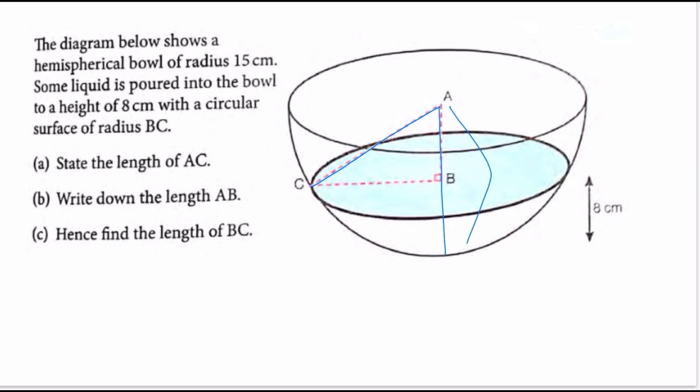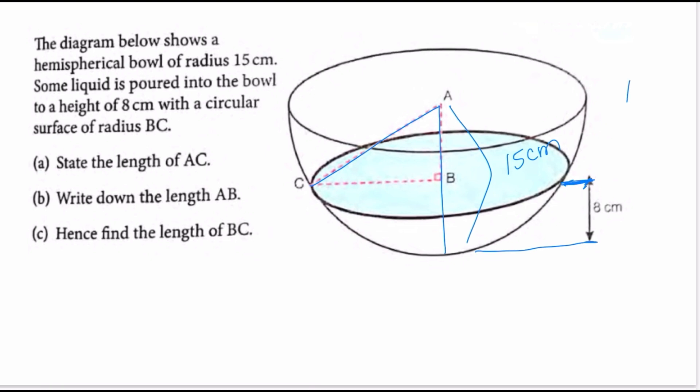This entire part is 15 centimeters and if they tell me that from the bottom right here all the way to the bottom of the hemisphere is 8 centimeters, then 15 minus 8 is 7 centimeters. So, that means that the length of AB is going to be 7 centimeters. AC is 15 centimeters, AB is 7 centimeters.